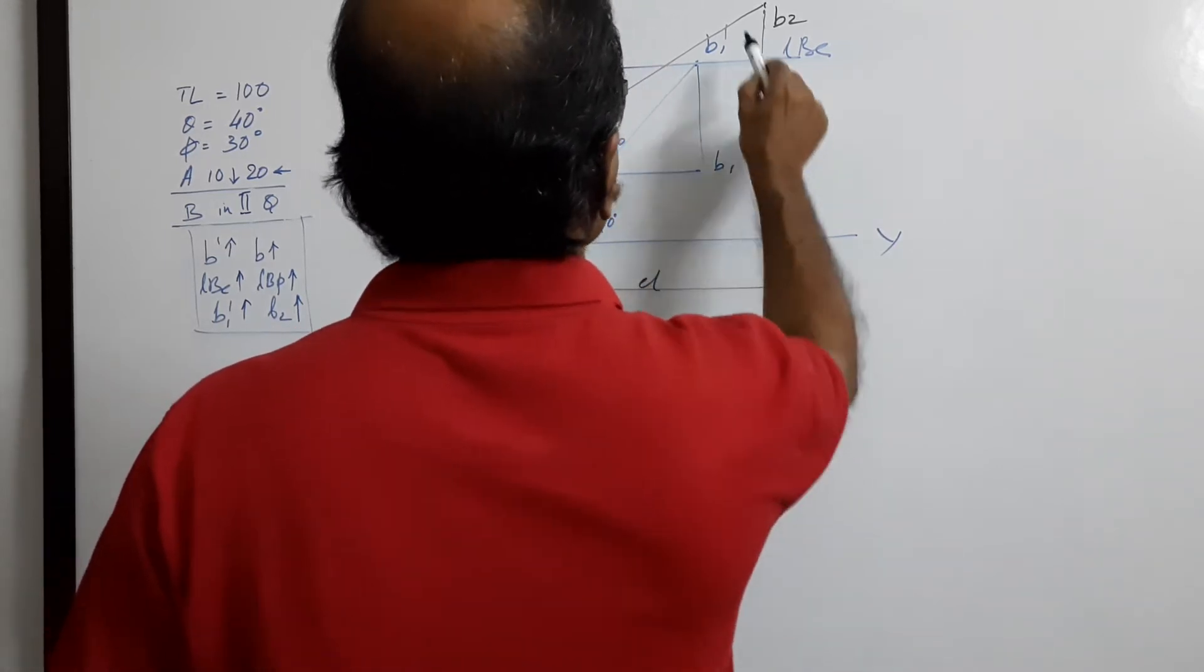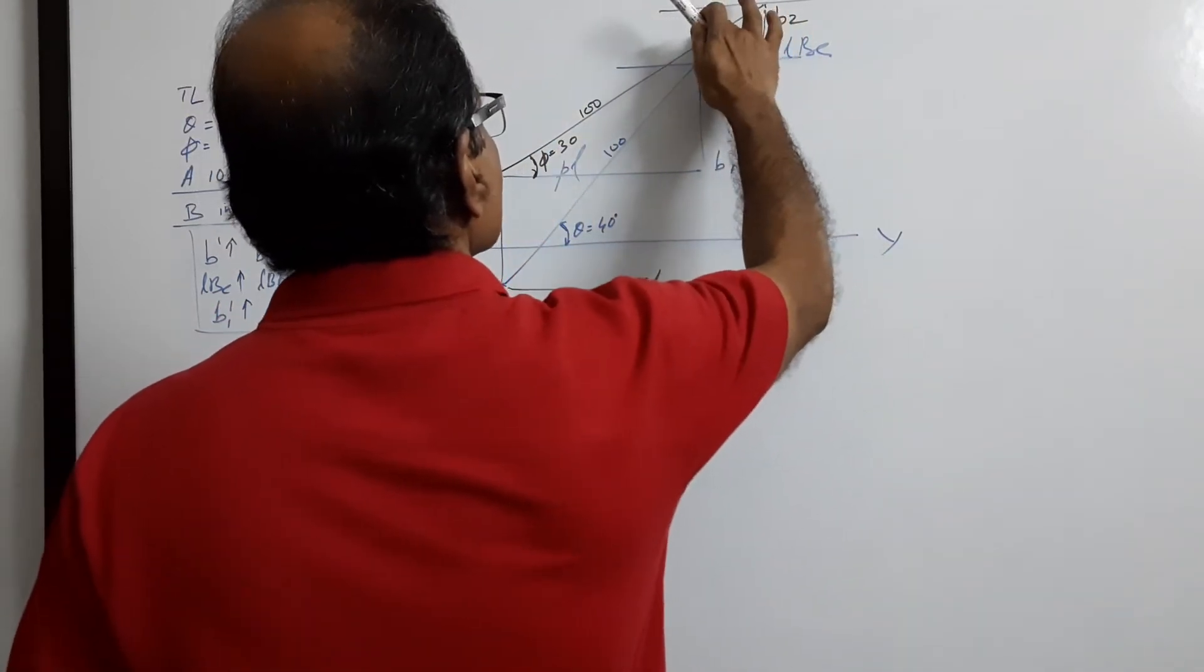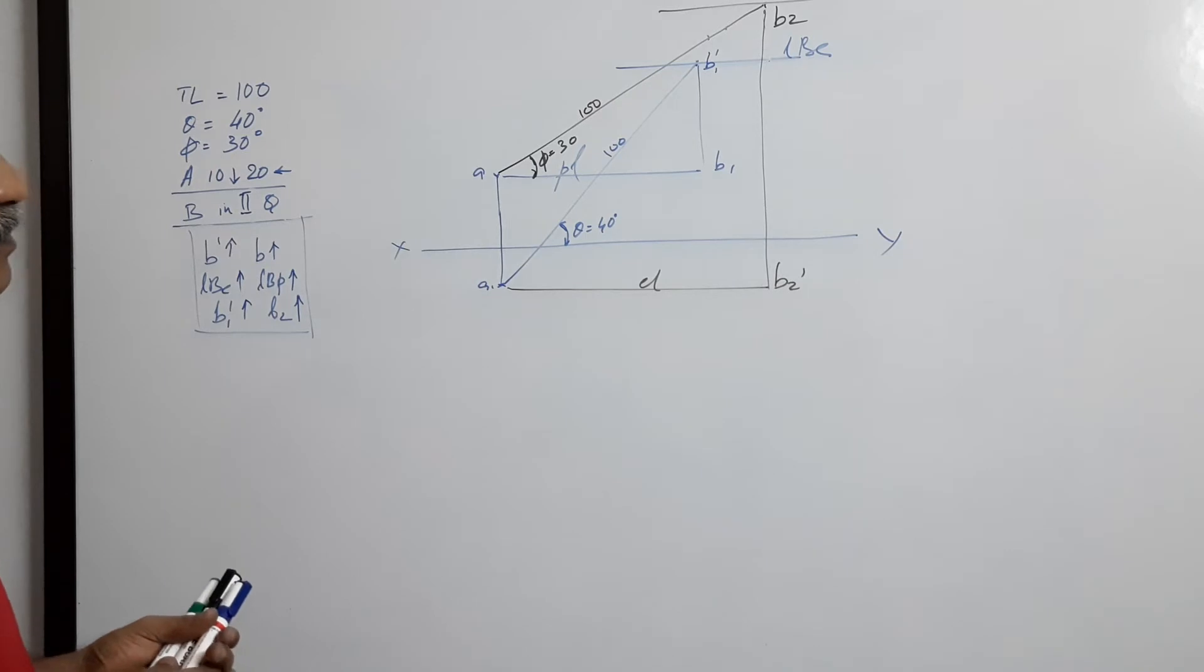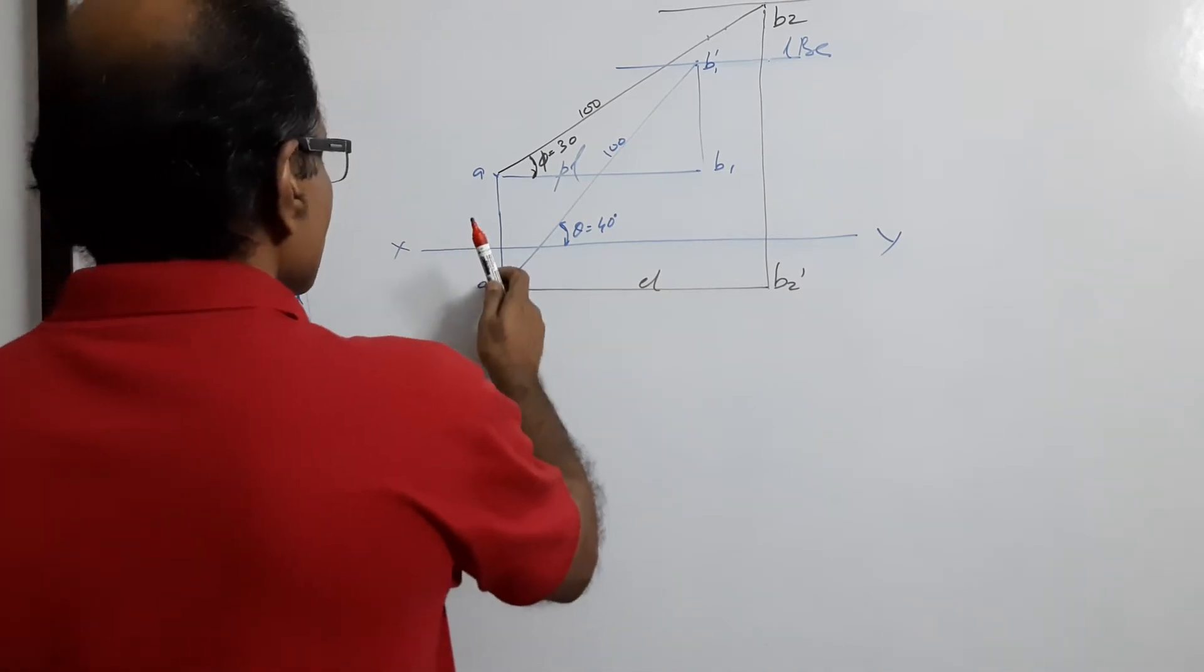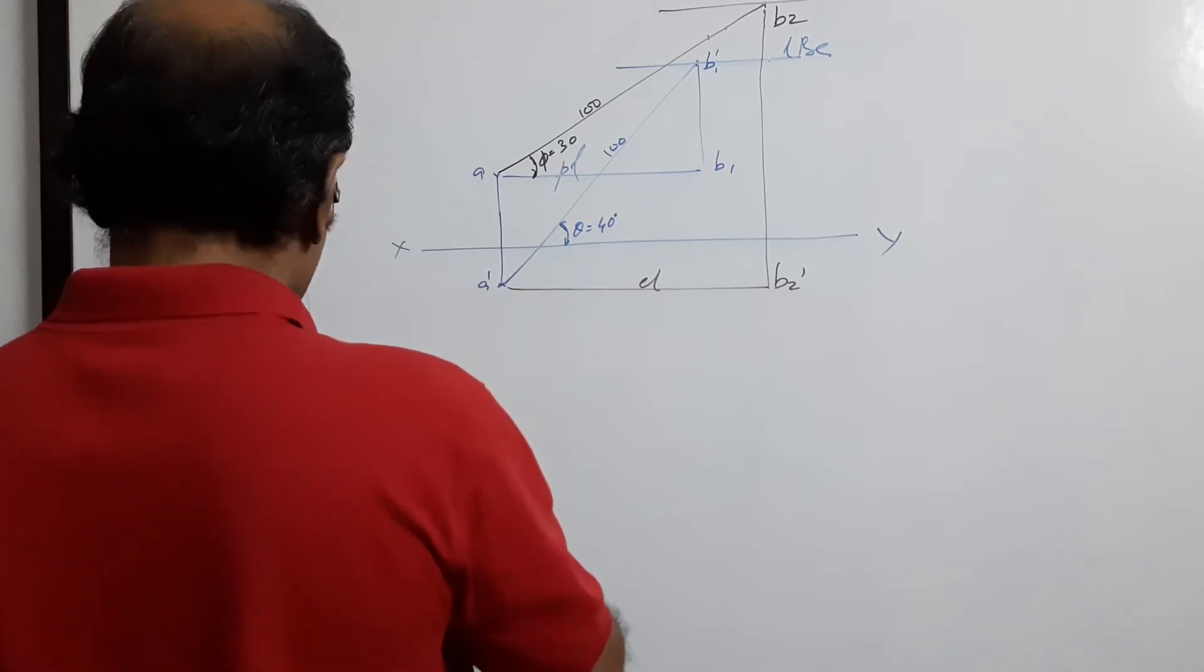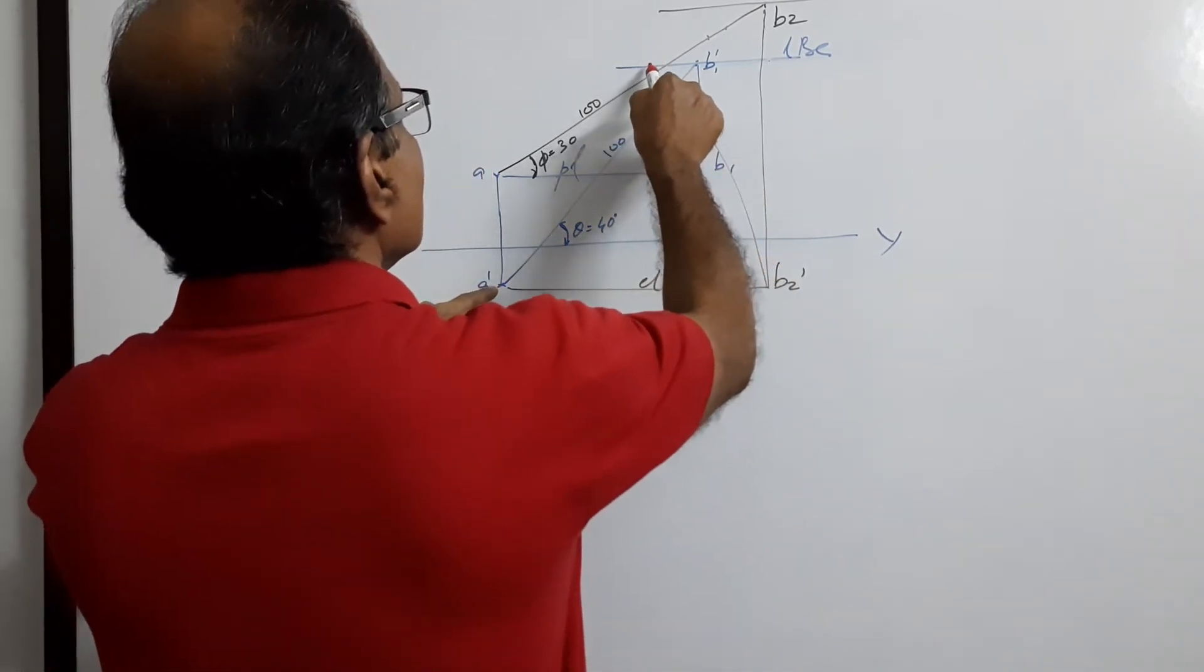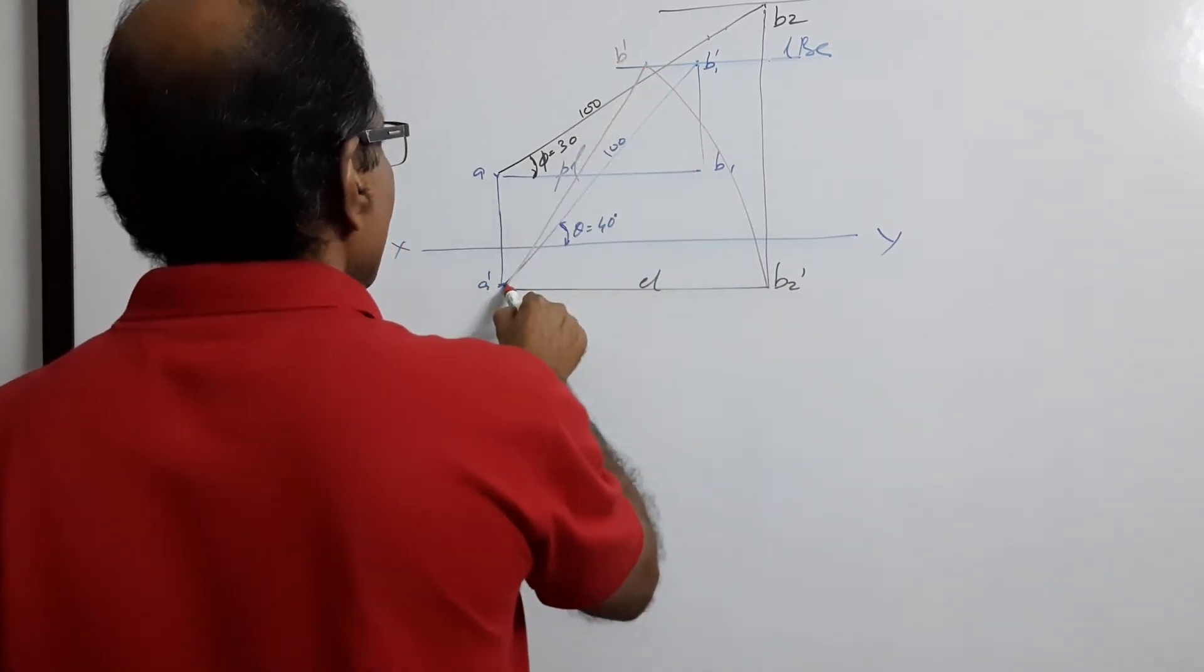B2 dash elevation length, LBP. This will mix up, I will draw them legibly. B1 dash. Draw the two arcs, here is A dash center. This is A dash actually. A dash as center, elevation length as radius. We have to cut on the locus of elevation. B dash. A dash B dash is the final elevation.